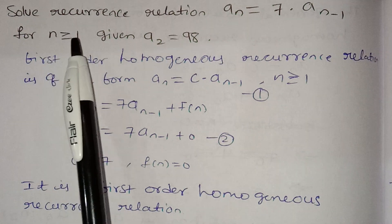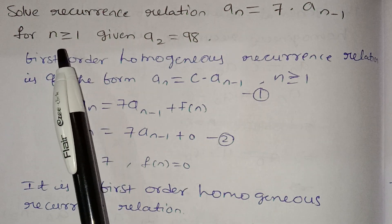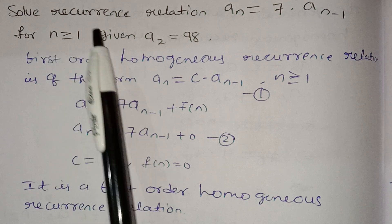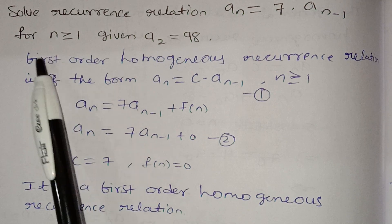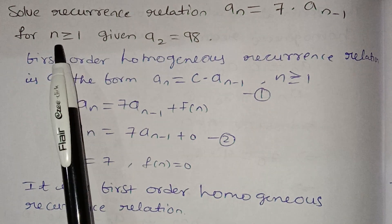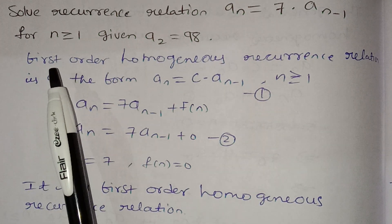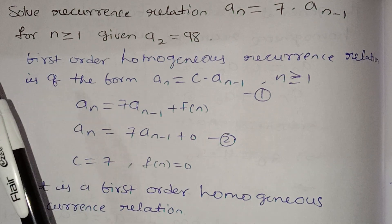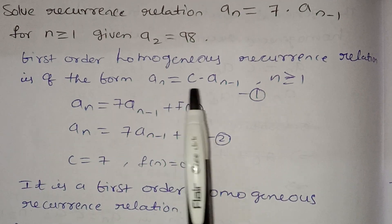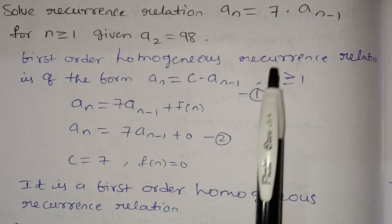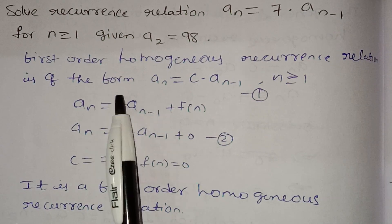For n greater than or equal to 1, we call it a first order homogeneous recurrence relation. The first order homogeneous recurrence relation is of the form aₙ equals c into aₙ₋₁, for n greater than or equal to 1.